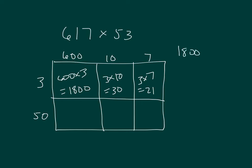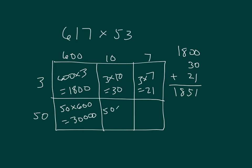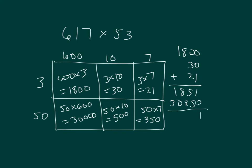If I add that together, I get the answer for 3 times 617. Adding the partial products for the tens digit gives us 30,850. Adding everything together, I get my answer of 32,701.